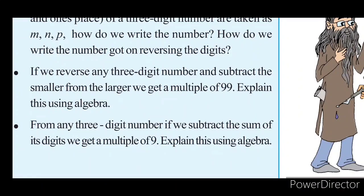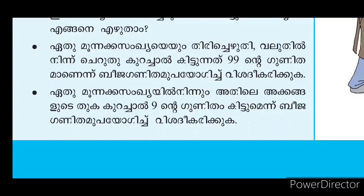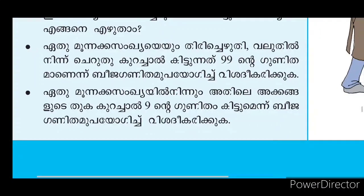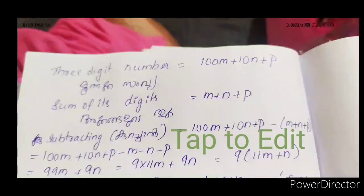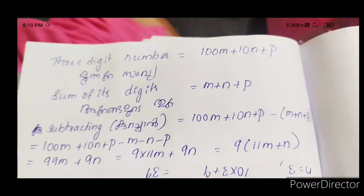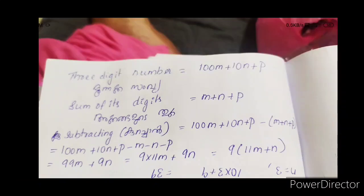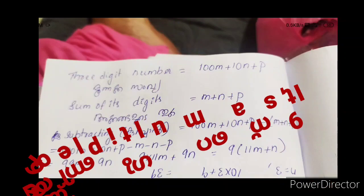From any 3-digit number, if we subtract the sum of its digits, we get a multiple of 9. For a 3-digit number 100M plus 10N plus P, we subtract the digit sum M plus N plus P. This gives: (100M plus 10N plus P) minus (M plus N plus P) equals 99M plus 9N, which equals 9(11M plus N). So the result is always a multiple of 9.